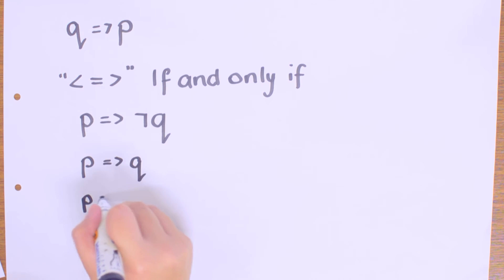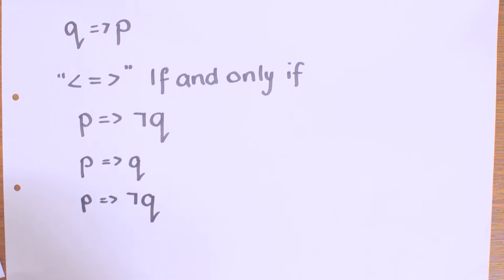Because if P implies Q and P implies not Q, they cannot both be true. You either have a driving license or you don't, so you have a contradiction, and this is always false.